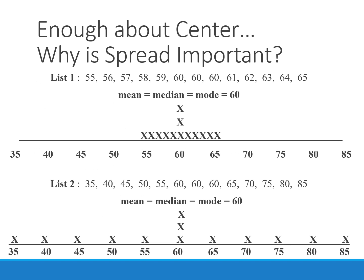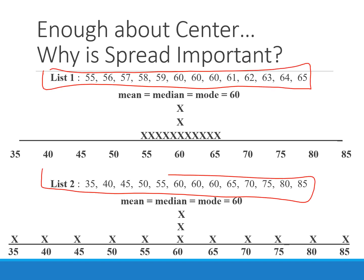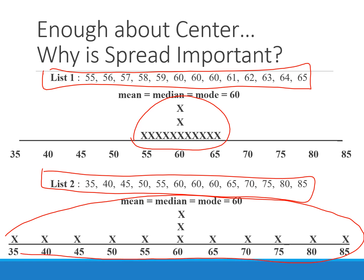Those are our measures of center. It's easy to understand why we'd want to boil an entire distribution down to a single number. But why is spread important? Here we have two different data sets with the same mean, median, and mode. Looking at a dot plot of the first data set, all the values are tightly clustered around the mean. Compare that to the second, where they are much more spread out — and that's important to know when looking at a data set.